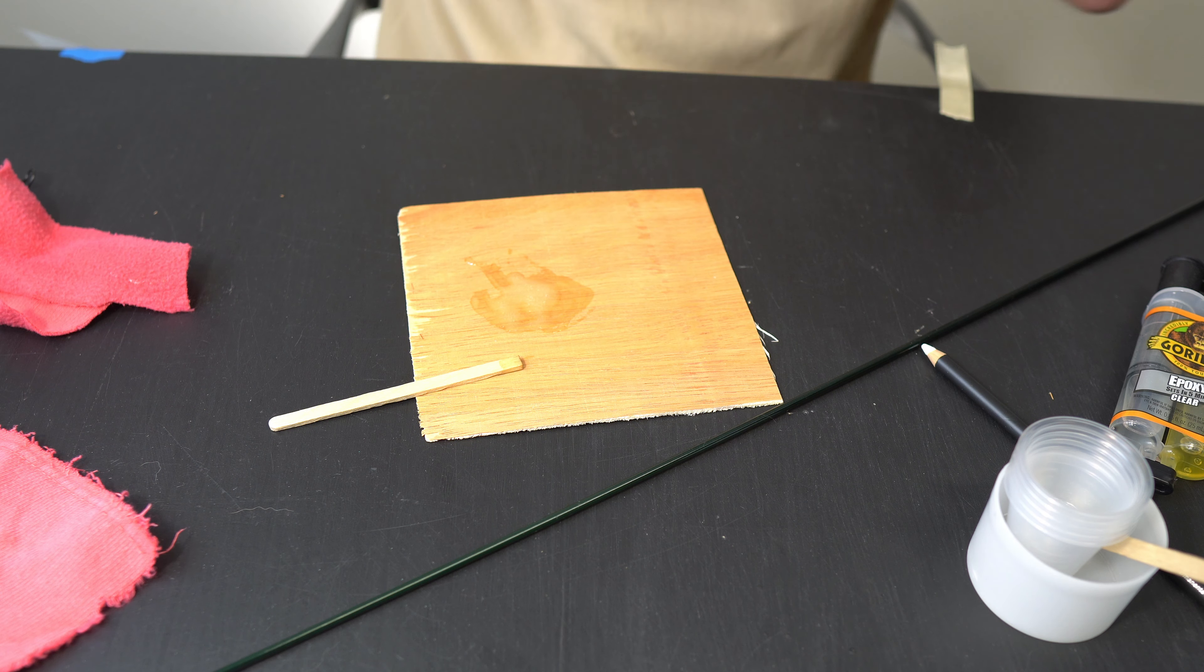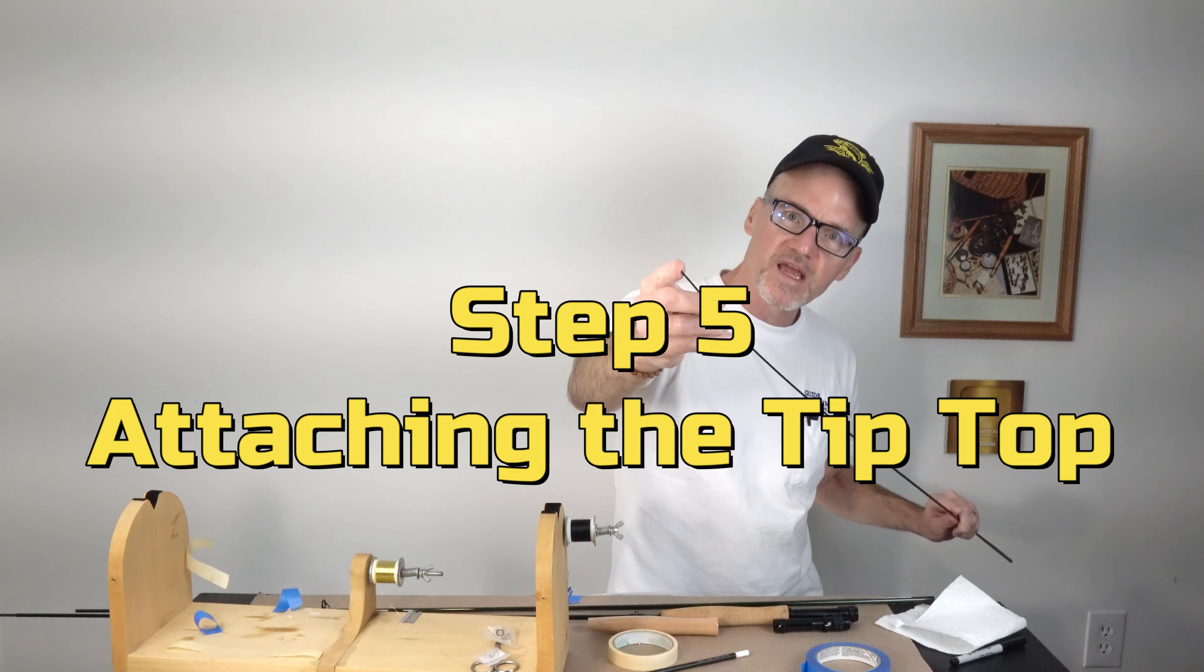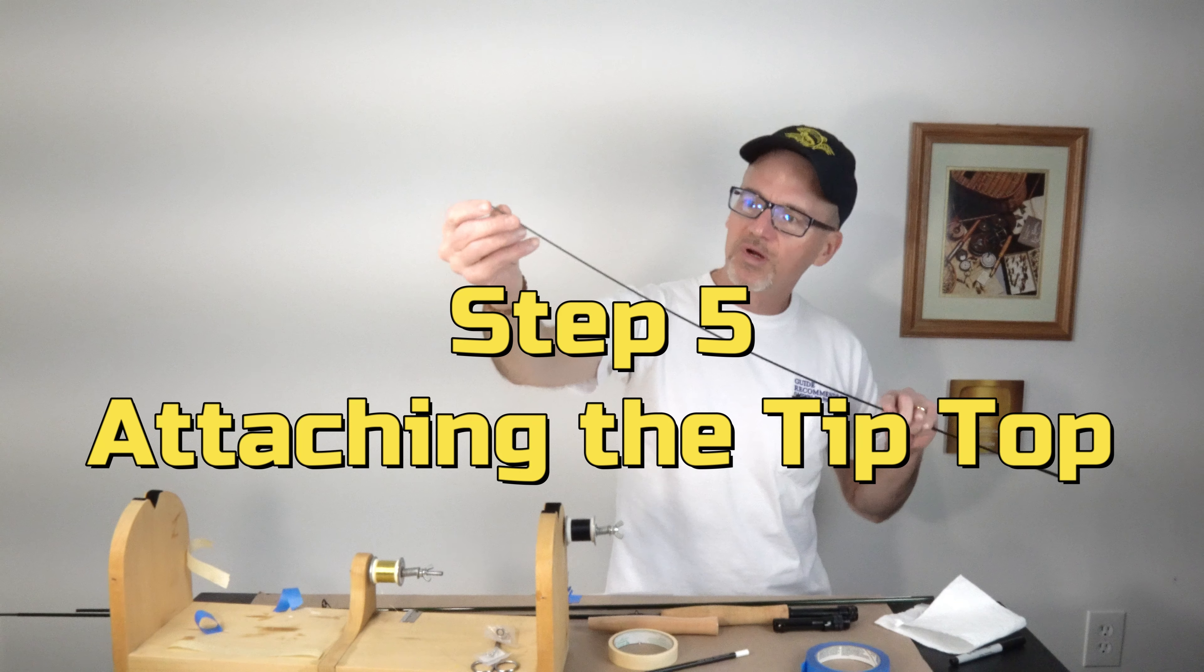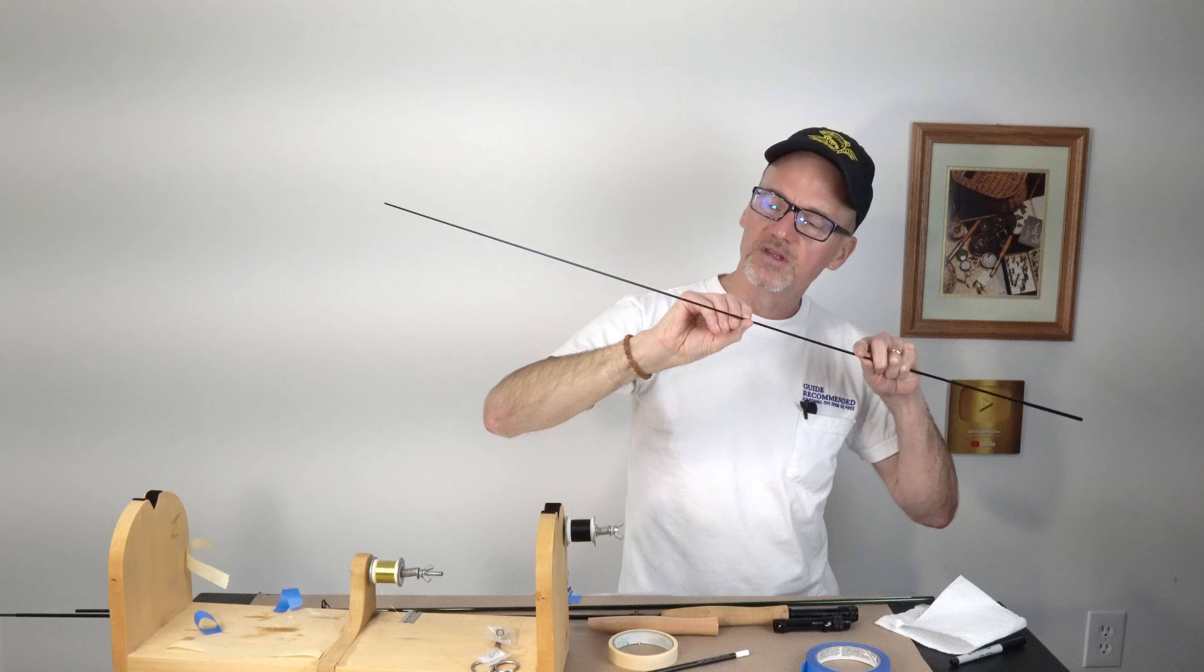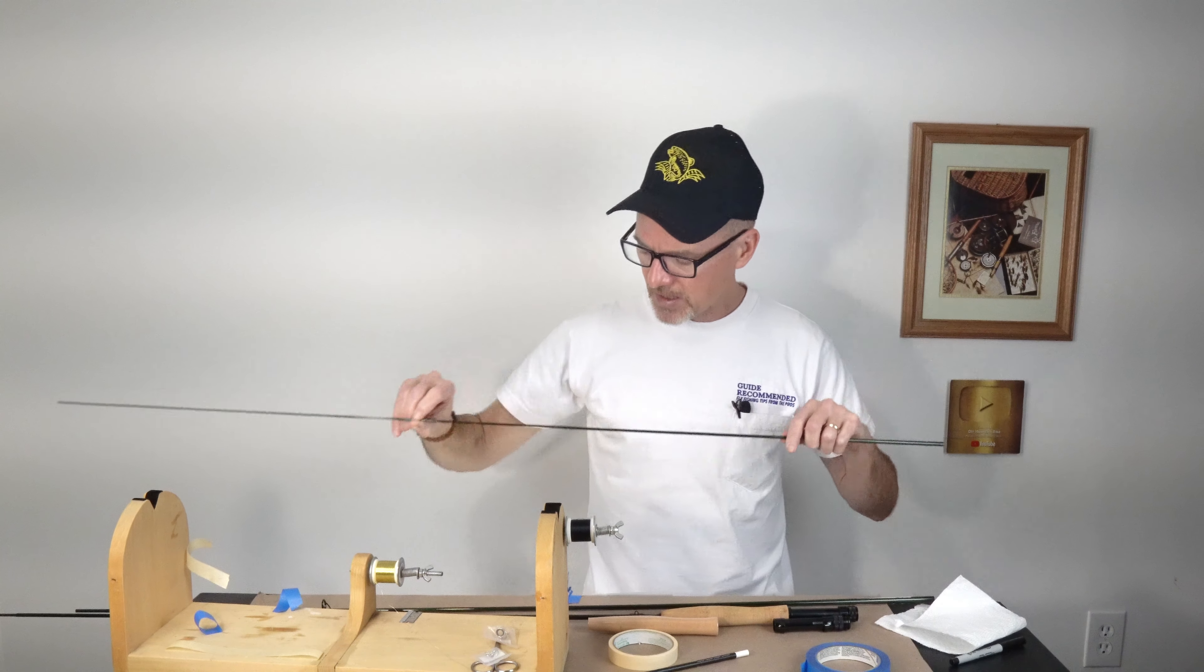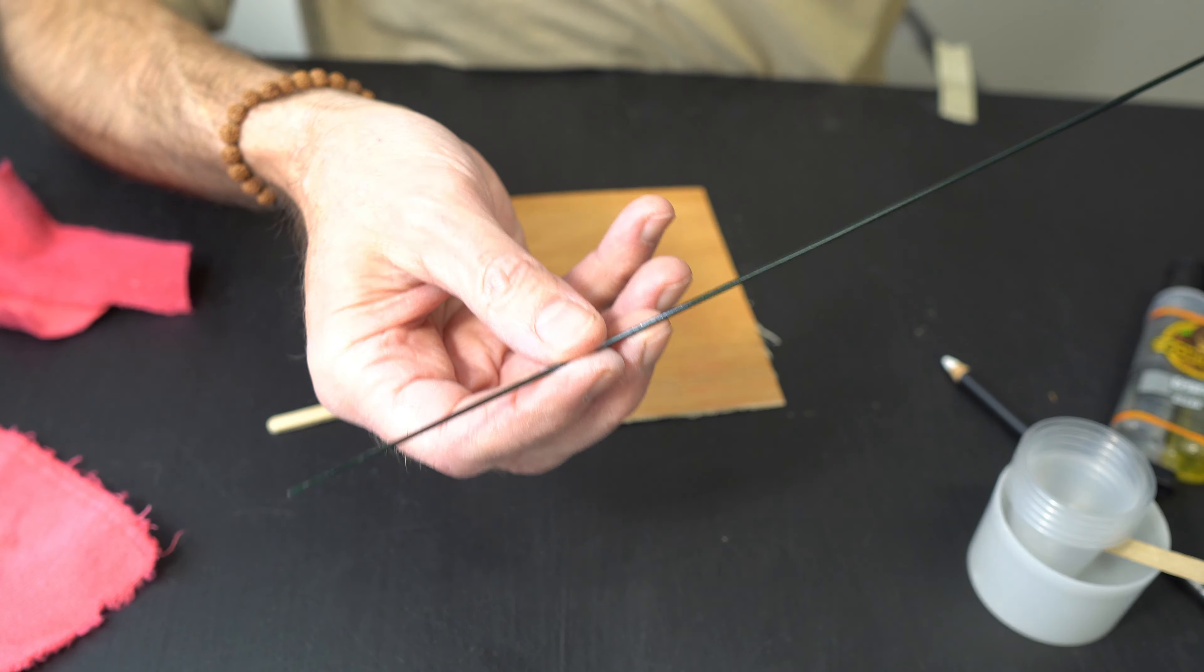It's on, we're going to set this to the side. Step five is attaching your tip top. You want that glued into place, again aligned with the spine of your fly rod tip top. Remember you got to look for our marks.